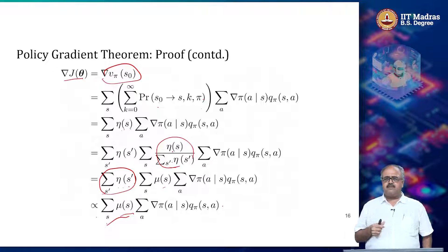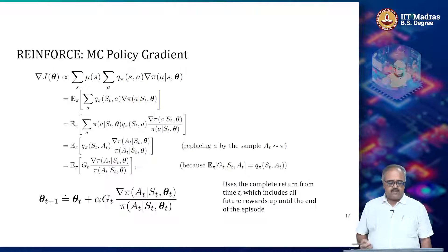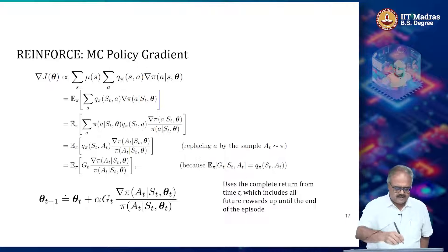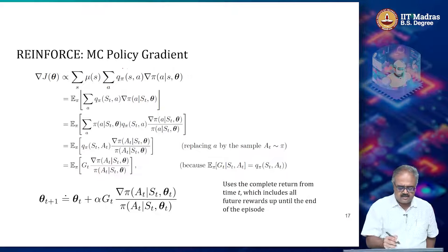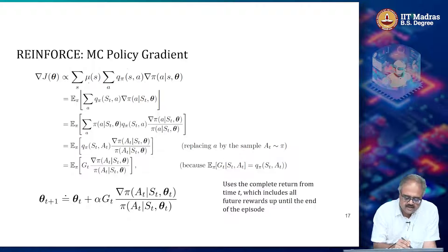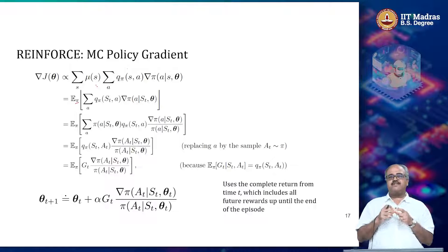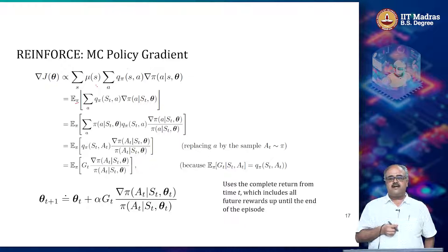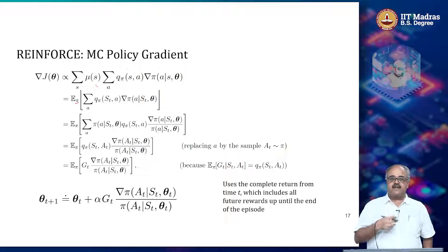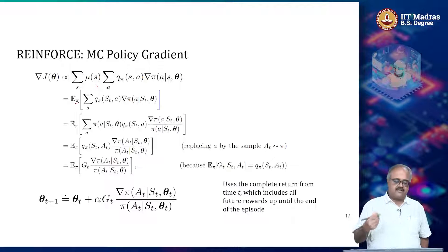We have the policy gradient theorem. But how does it relate back to the REINFORCE update we saw earlier? One way of thinking about what we can do with the policy gradient theorem is that we have this summation. We can think of this as taking a sampling according to the policy pi of the state distribution. Mu of s is the fraction of the time that my agent will spend in state s while executing policy pi. So to get that fraction of the time, I can basically just sample the states according to pi.